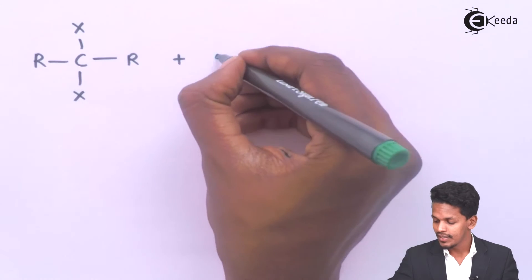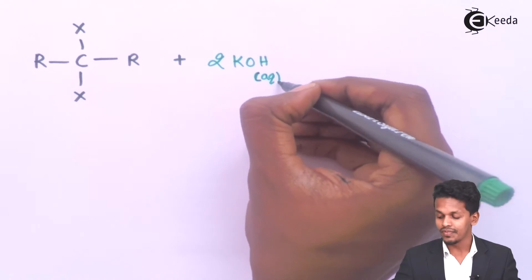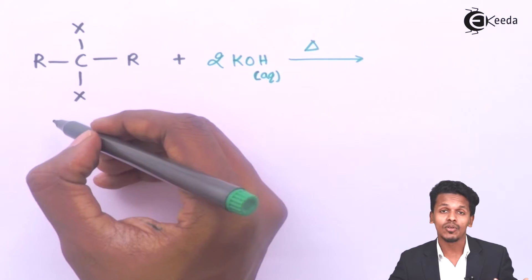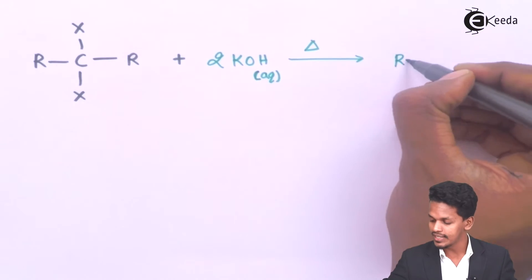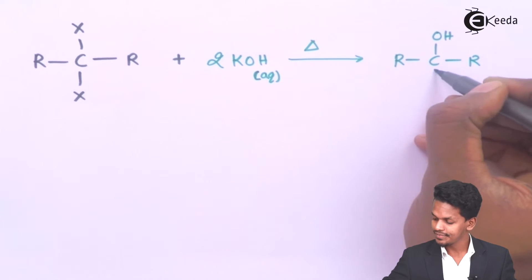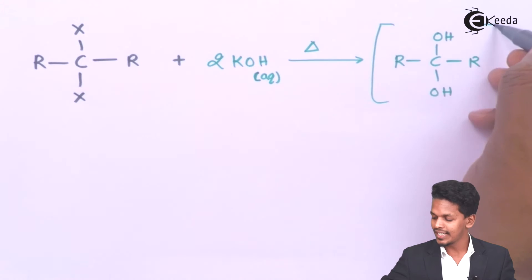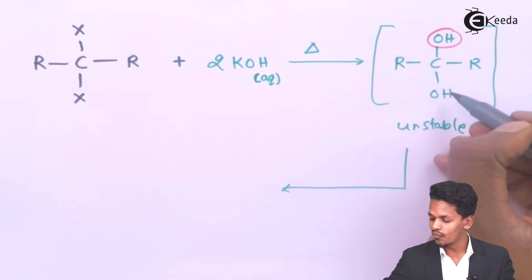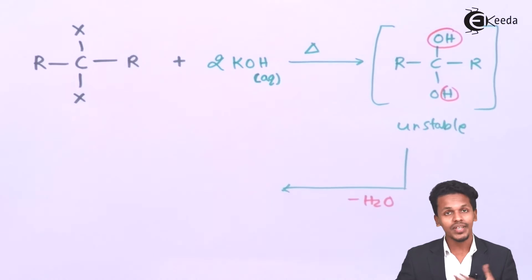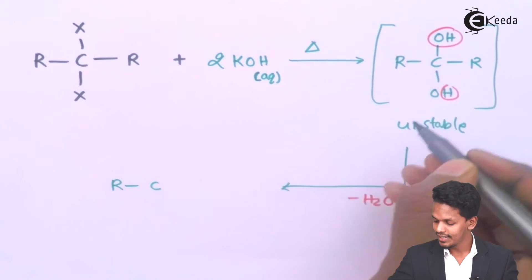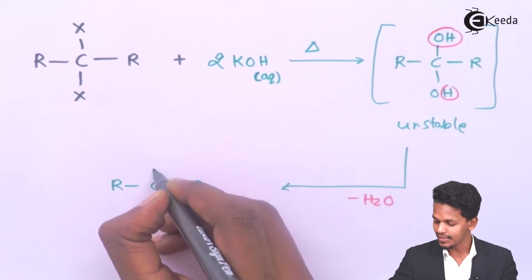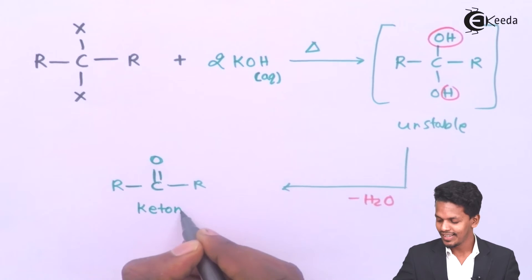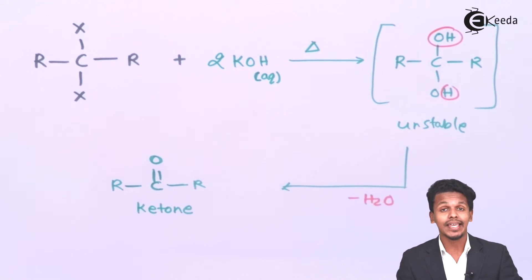This geminal dihalide reacts with an aqueous solution of KOH. The halogen atoms are replaced by OH groups, giving an unstable intermediate diol product. Water is then removed as a byproduct, and the stable product obtained is RCR'=O, which is a ketone.